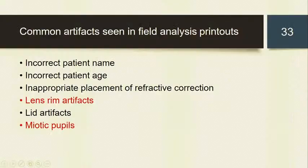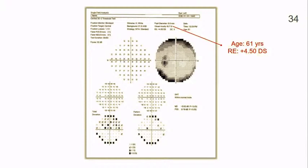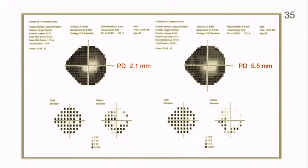Common artifacts in field analysis printouts include those caused by lens rim and miotic pupils. For example, in a 61-year-old patient with a refractive error of 4.5 dioptres, a ring scotoma is visible in both the total deviation and pattern deviation plots — possibly caused by the thick lens rim obstructing their vision at the side. This is an example of a lens artifact. Another example showed a patient with a pupil diameter of 2.1mm with several decreased points in both hemispheres in the pattern deviation plot, which significantly improved after dilation to 5.5mm.